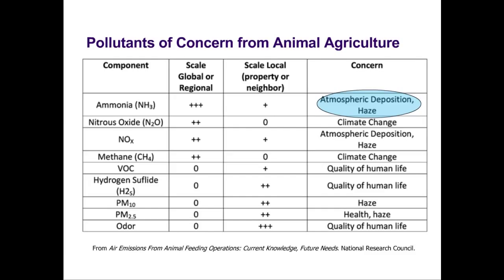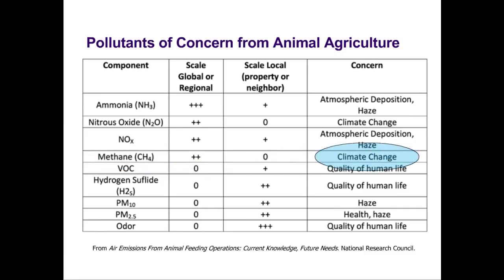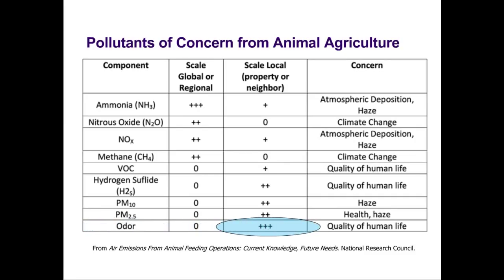Globally, nitrous oxide and methane are classified as greenhouse gases. At the local scale, odorous gases tend to dominate discussion. Global concerns are typically regulated at a federal level, while local concerns are dealt with at the state, county, or township level.